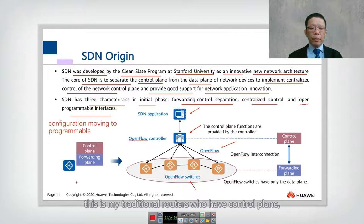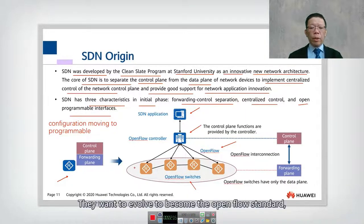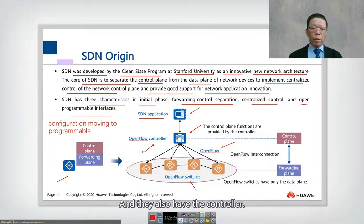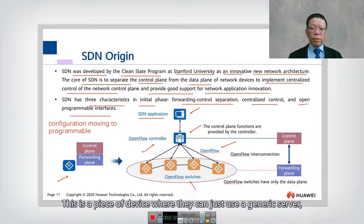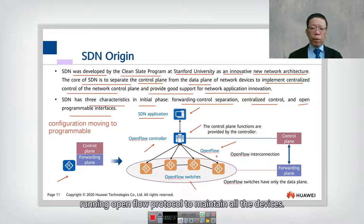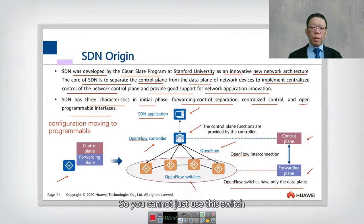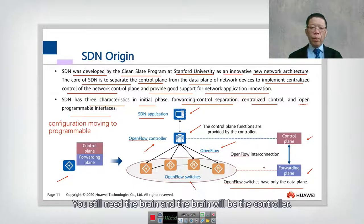In this diagram, you can see the traditional routers that have a control plane, forwarding plane, and management plane, evolving toward the OpenFlow standard. We have the SDN application, which is vendor-dependent, and the controller — a generic device running on ARM or X86 with the SDN application using the OpenFlow protocol. OpenFlow switches have only the data plane and no control; they still need the controller as the brain.